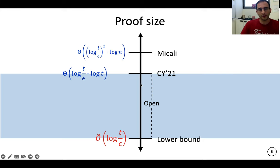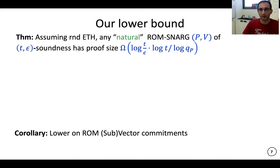And this leads us exactly to the result of this paper, which is actually the first non-trivial lower bound on SNARGs. So assuming randomized ETH, any natural ROM SNARG construction, so any natural construction (and I'm going to talk about this in a second), that has (t,ε)-soundness must have a proof size of this: log(t/ε)·log(t)/log(q_P), where q_P is the running time of the honest prover, the number of queries the honest prover performs. So this is our main theorem.